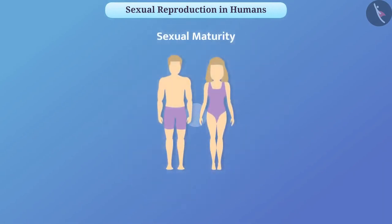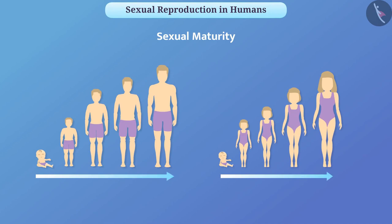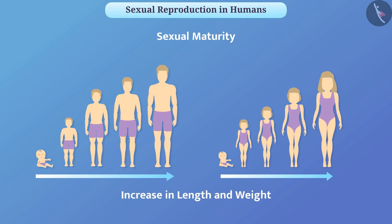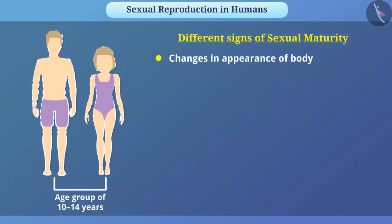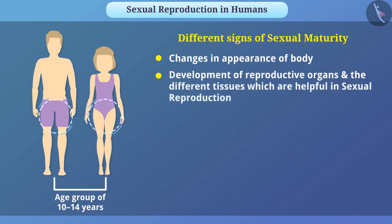Sexual maturity of parents is necessary in sexual reproduction. As a person grows in age, many changes occur in the body such as increase in length and weight. These are only physical changes. In the context of sexual maturity, boys and girls undergo various changes in the age group of 10 to 14 years — for example, appearance of body, development of reproductive organs, and the different tissues which are helpful in sexual reproduction.